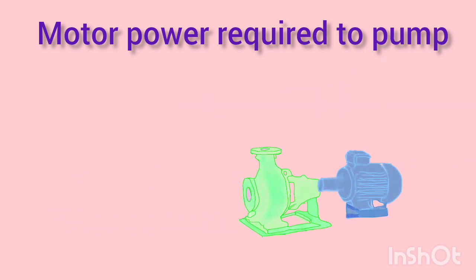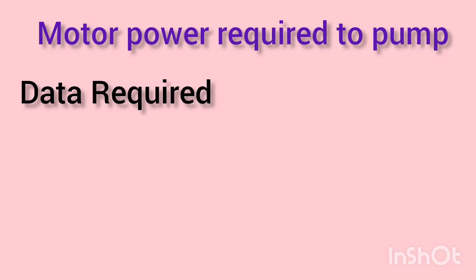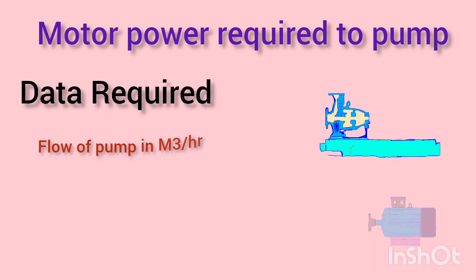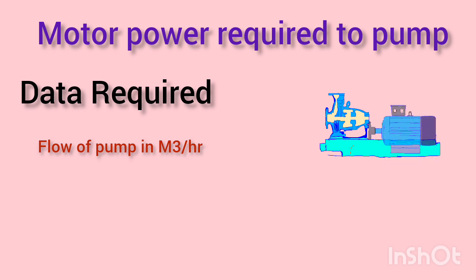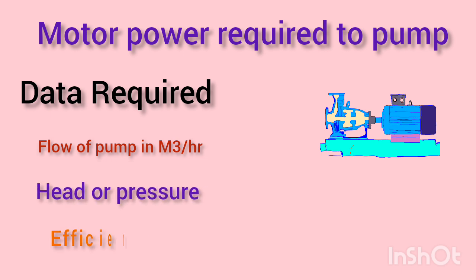First, let's talk about the data you'll need to collect to calculate pump power. You'll need to know the flow rate of the fluid you're pumping, which is usually measured in liters or cubic meters. You'll also need to know the pressure difference between the inlet and outlet of the pump, which is usually measured in bar or pascal.